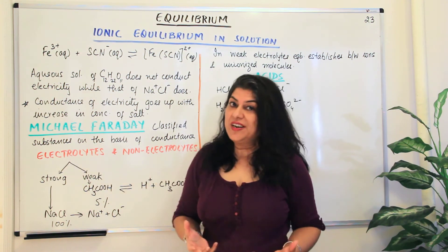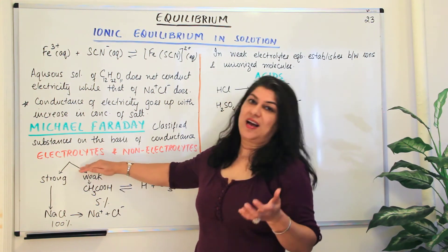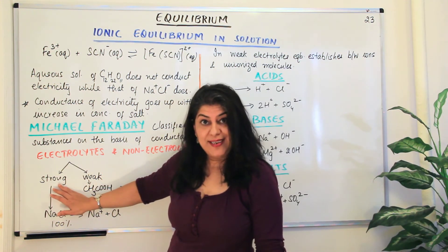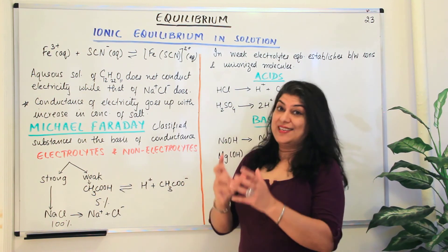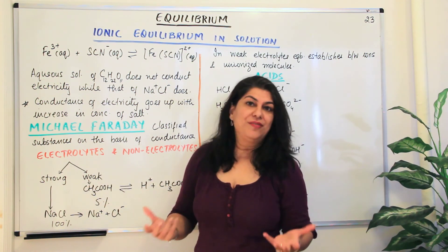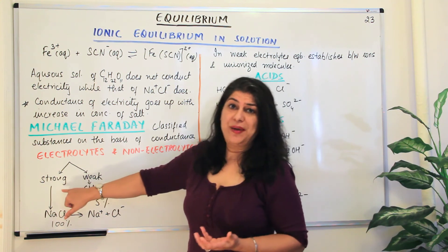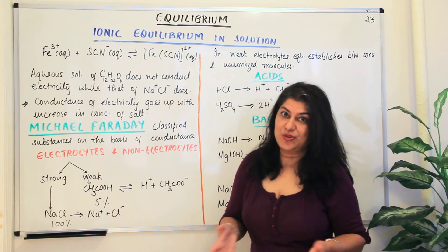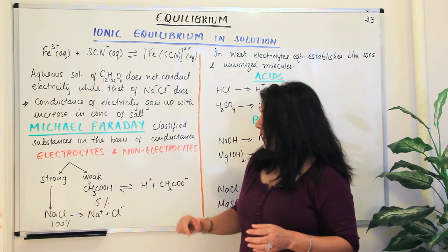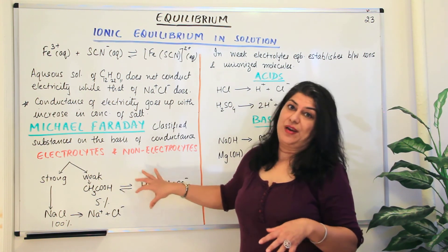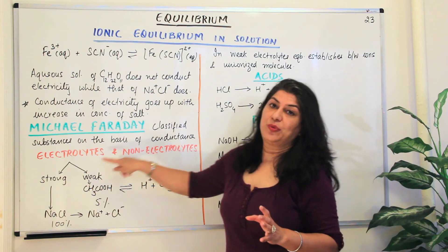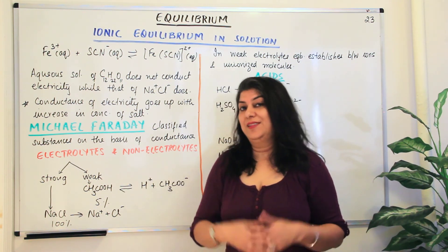Irrespective of how the ions are behaving, all of these — acids, bases, and salts — are ionic compounds and all fulfill the category of electrolytes that Michael Faraday described. Electrolytes are substances which conduct electricity when dissolved in water. All of these would behave as electrolytes, with some behaving as strong electrolytes and some as weak electrolytes. If an acid is a strong electrolyte, we call it a strong acid; if it's a weak electrolyte, we call it a weak acid. Similarly, a base can be strong or weak depending on how much it dissociates in water. But it is only the weak electrolytes among all of these which would show a proper equilibrium — and those are the reactions we will be interested in in the coming videos.